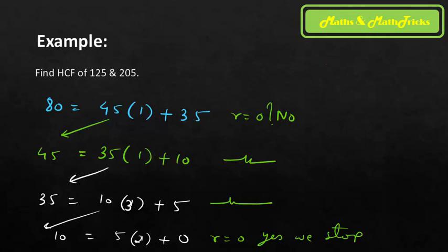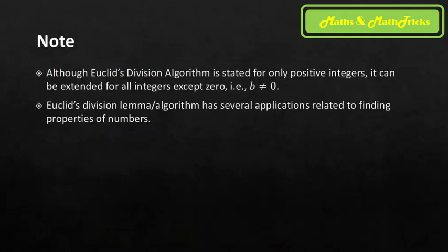We stop when the remainder is 0. The last divisor that yields remainder zero is declared the HCF. In this case, the HCF of 125 and 205 is 5. In Euclid's Division Algorithm, at each step the previous divisor becomes the new dividend and the previous remainder becomes the new divisor, continuing until remainder equals zero.